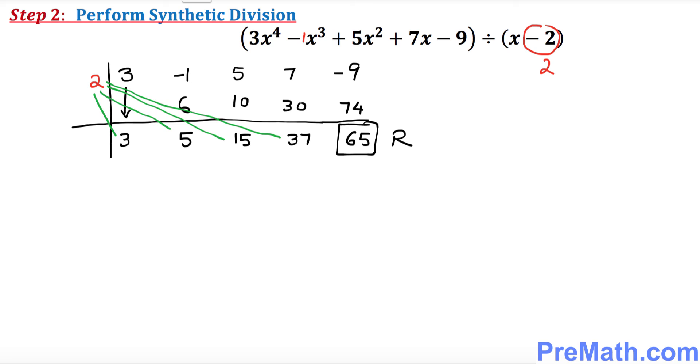So what we have right now on this side, this number is going to be for x power 3. This is going to be x power 2. This is going to be x and this is without x which is called constant. So what we end up with is 3x power 3 plus 5x square plus 15x plus 37.